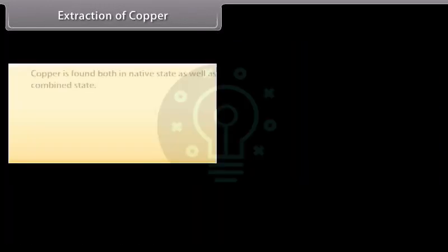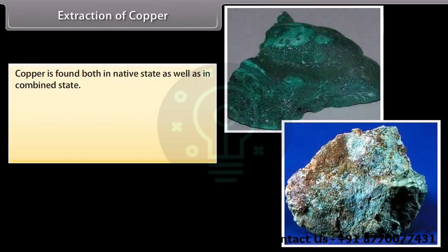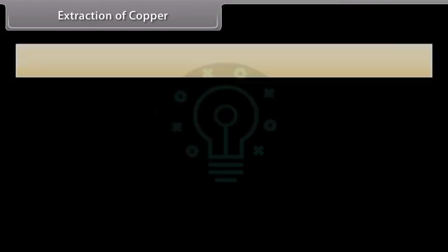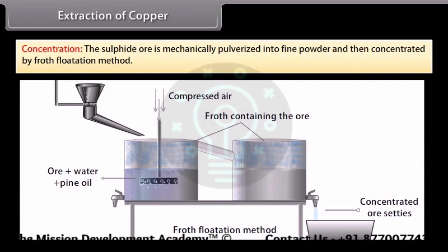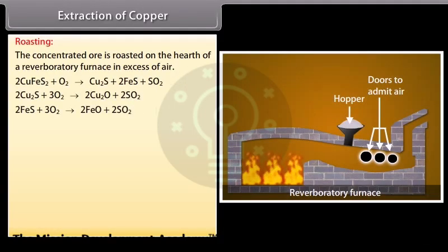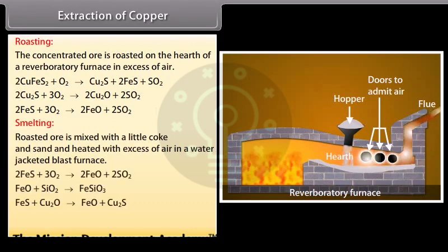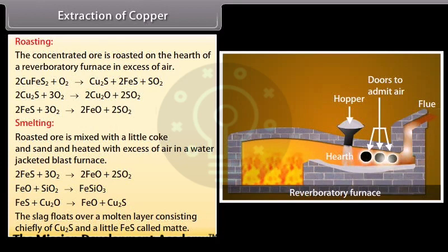Extraction of copper. Copper is found both in native state as well as in combined state. The main occurrence of copper as sulphides, oxides and carbonates. The important steps involved in the extraction of iron are: Concentration: The sulphide ore is mechanically pulverized into fine powder and then concentrated by broth flotation method. Roasting: The concentrated ore is roasted on the hearth of a reverberatory furnace in excess of air. Smelting: Roasted ore is mixed with a little cork and sand and heated with excess of air in a water jacketed blast furnace. Most of the remaining iron sulphide is converted into oxide which reacts with silica forming fusible slag of iron silicate.